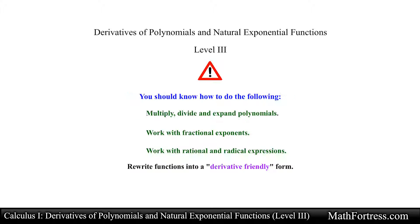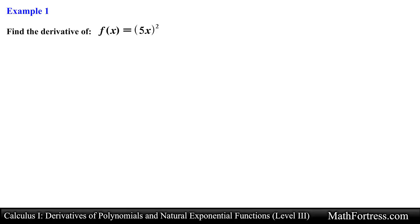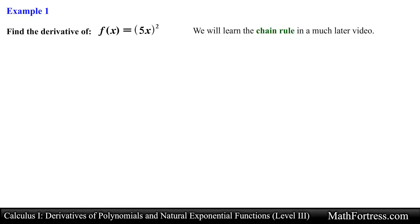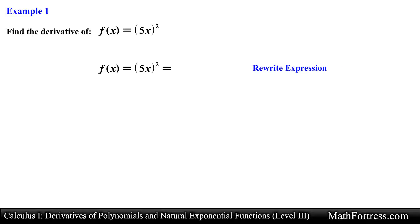Let's jump straight into the first example. Find the derivative of f equals the quantity 5x raised to the power of 2. Notice that in this function we have the quantity 5x being raised to the power of 2. We cannot apply the power rule in its current form. In a much later video we will learn a new rule that will help us deal with these types of functions more efficiently. For now, with our current differentiation rules at our disposal, we would first need to rewrite the function by applying the power to the constant 5 and the linear function x as follows.